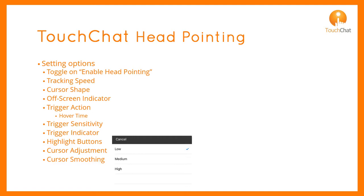With a lower smoothing, relatively little head movement will move the cursor, but it is more responsive and tracks the person's head a bit tighter.